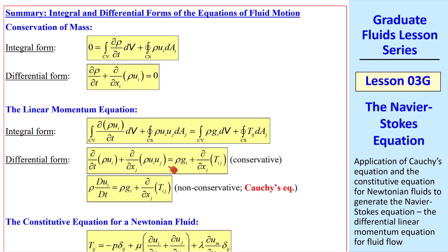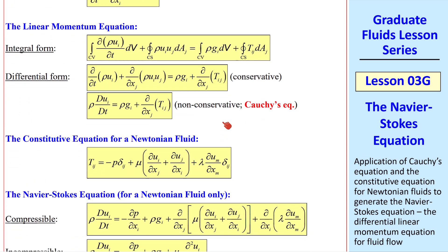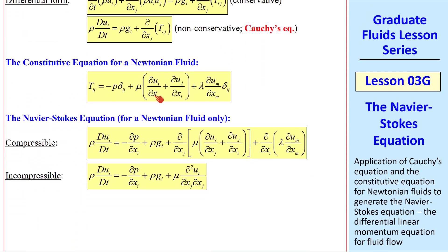Note that we have both the conservative form and the non-conservative form, which we called Cauchy's equation. We used this one to generate the Navier-Stokes equation, although you could do a similar thing with the conservative form. The constitutive equation for a Newtonian fluid is given here, and then we just derived both the compressible and incompressible Navier-Stokes equation, again in tensor notation.